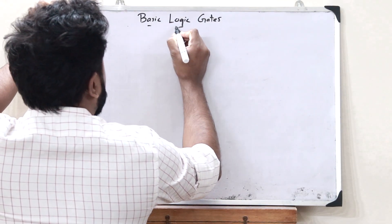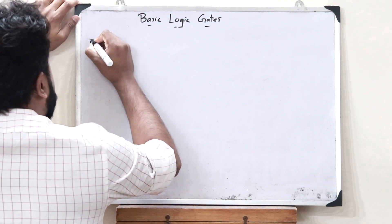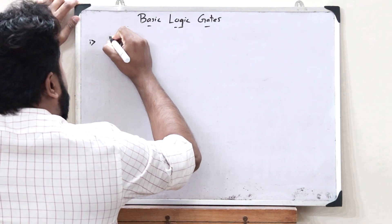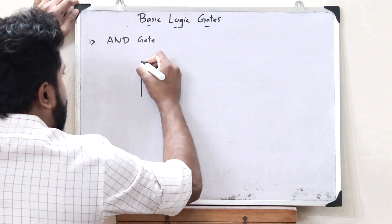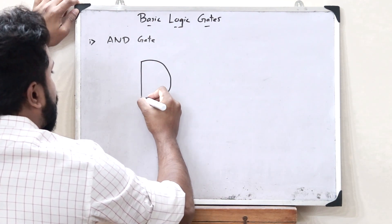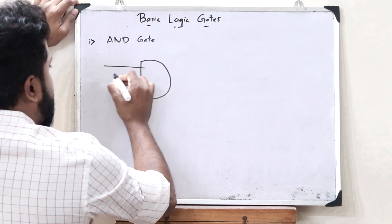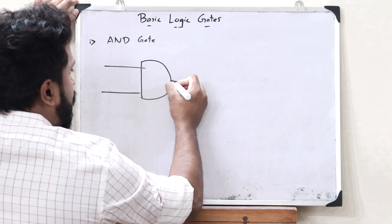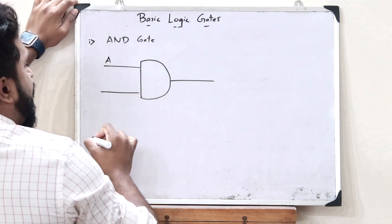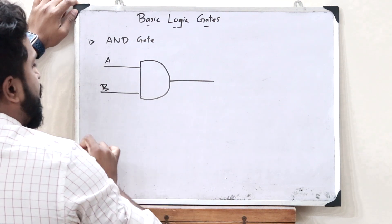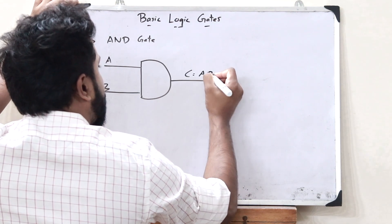There are a number of logic gates that are present. The first logic gate we'd be seeing is an AND gate. An AND gate is represented like this — it would have two inputs over here and one output. If this input is A and this input is B, then we get an output C is equal to A dot B.